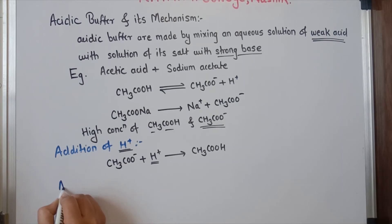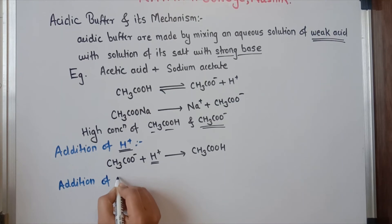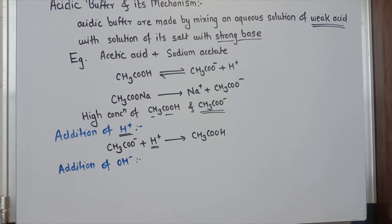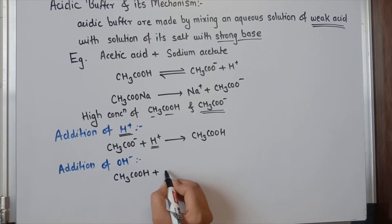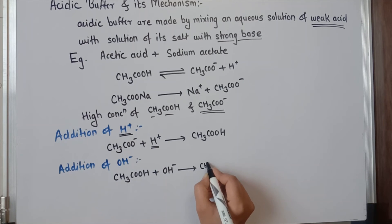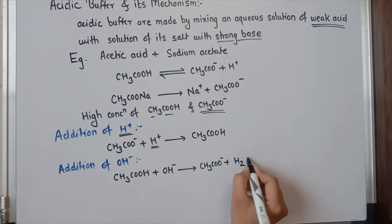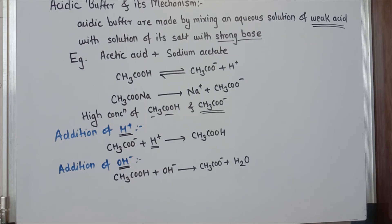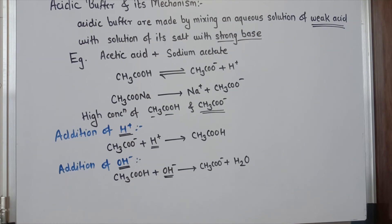Next, on the addition of a base — that means OH⁻ — when we add OH⁻ to our solution, there is a high concentration of acetic acid. This acetic acid reacts with OH⁻ to give CH3COO⁻ plus H₂O. So when OH⁻ is added to the solution, it is expected that the pH or pOH would change, but all the added OH⁻ ions get consumed by the acetic acid and therefore there is no change in the pH.